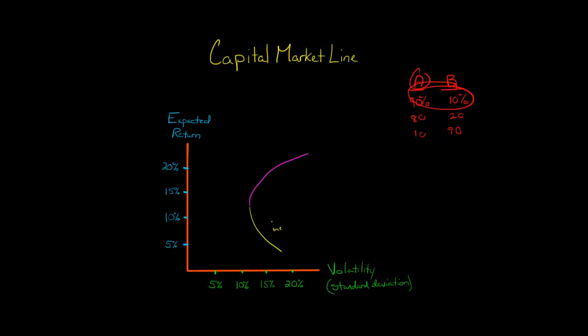All of the ones on this yellow part are inefficient portfolios. When I say inefficient, I mean that we could find a different portfolio that has a higher return yet does not have higher risk — it has the same volatility but a higher expected return. So obviously we don't want these portfolios because we can get a higher expected return without taking on any more risk.